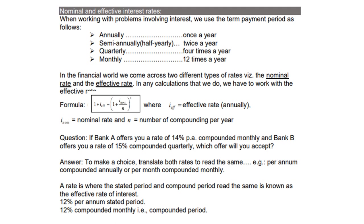The answer is: to make a choice, translate both rates to read the same — for example, per annum compounded annually, or per month compounded monthly. A rate where the stated period and compounding period read the same is known as the effective rate of interest. For example, 12% per annum is the stated period, and 12% compounded monthly is the compounding period.